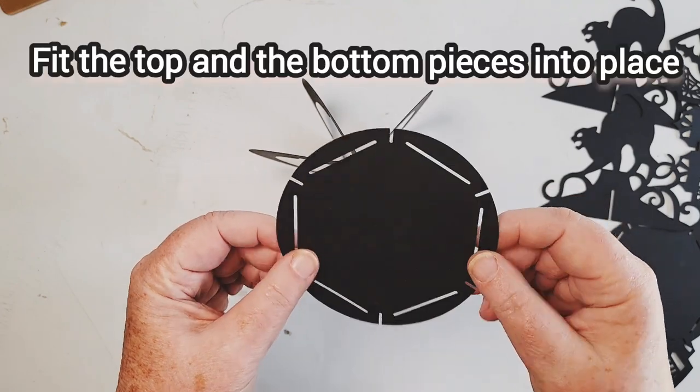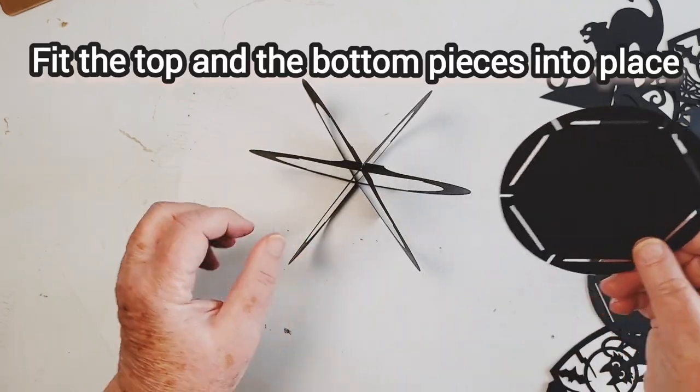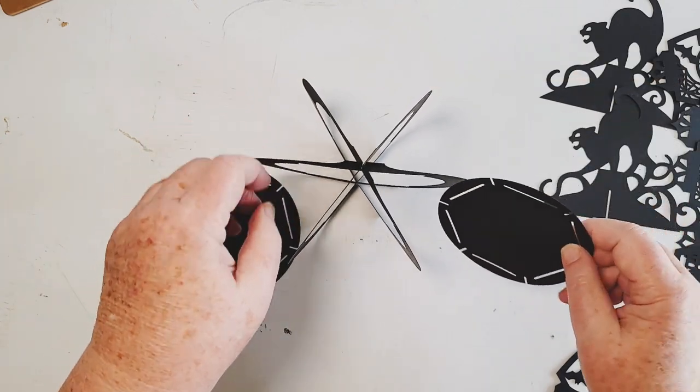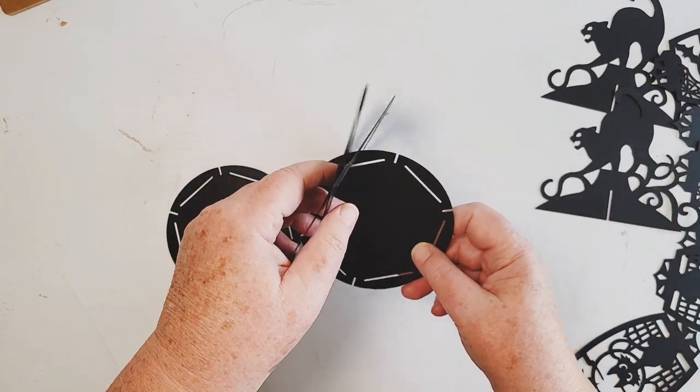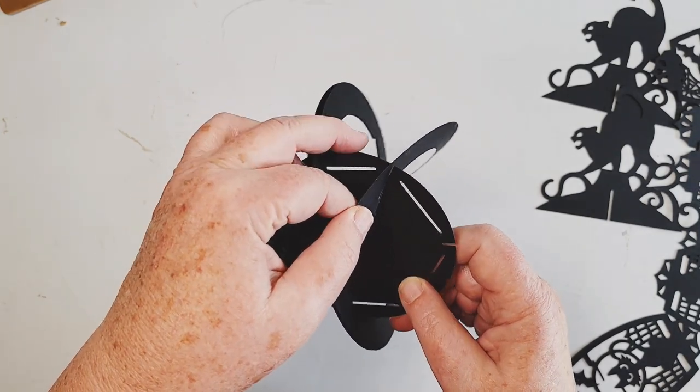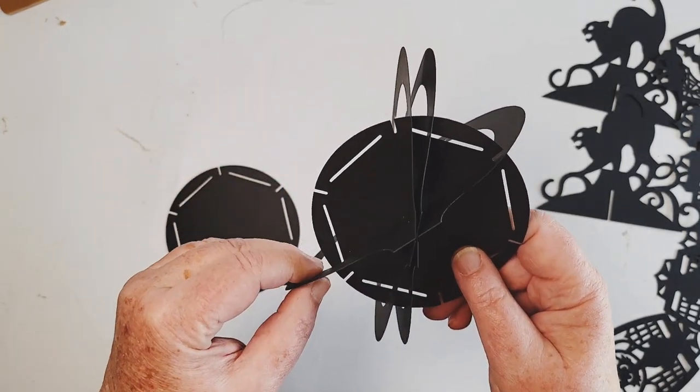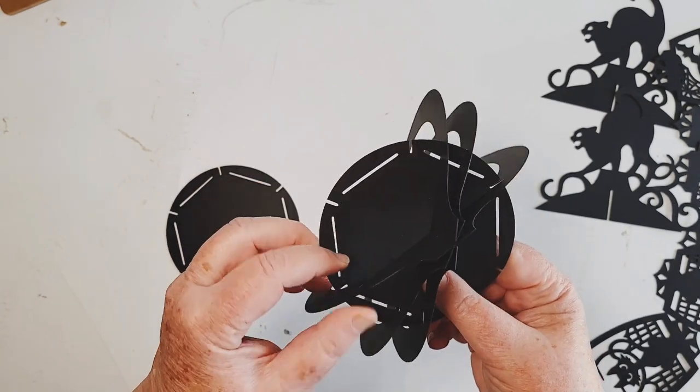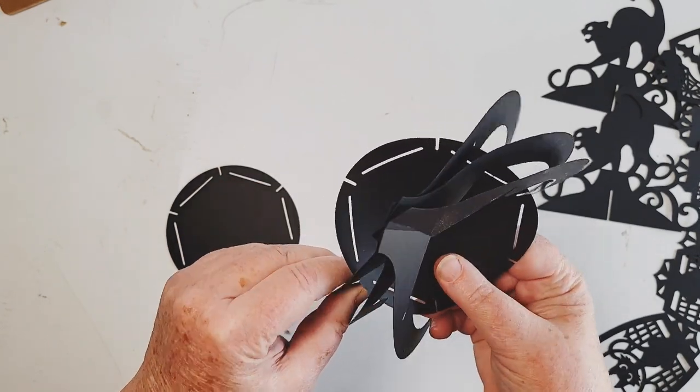Next, you take either the top or the bottom, it doesn't matter. These two, for this one, these are the same. So I start with the top one, push these away so you can get to them, and line up the notch here and the one on the opposite side. You have to bend a little to get it to fit over here.